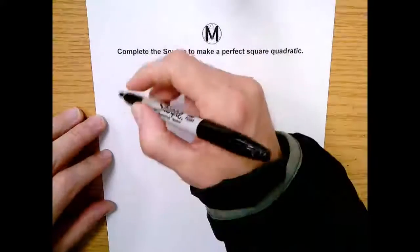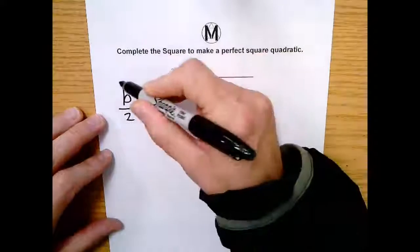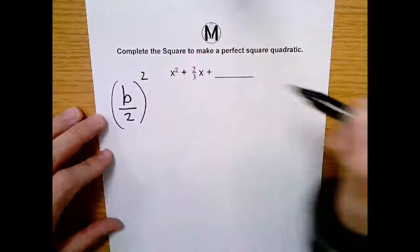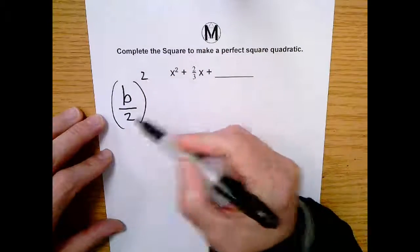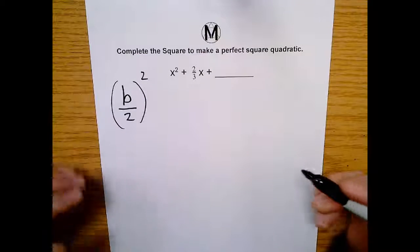What we're going to work off here is you need to take your b value divided by 2 and square it. Okay, by adding this segment right here, you will create a perfect square quadratic and then you will be able to complete the square.